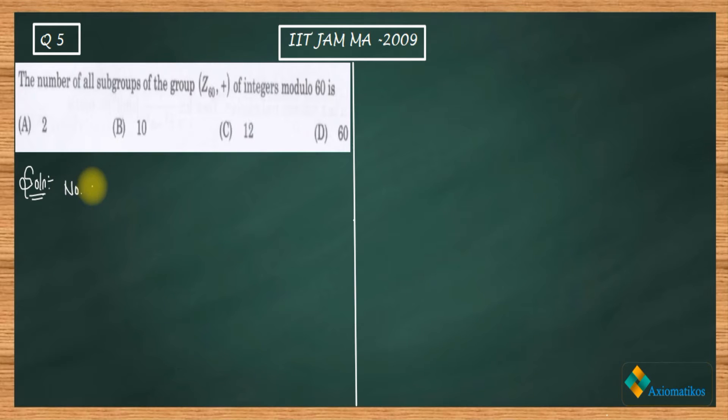So what is that? Note: it's very simple. Number of subgroups of Zn with addition modulo n is equal to τ(n). If you have studied number theory, then you must have already known this function. This τ is actually representing the number of positive divisors of n.